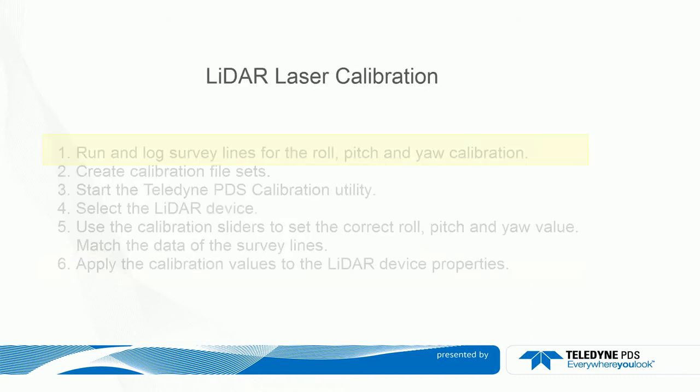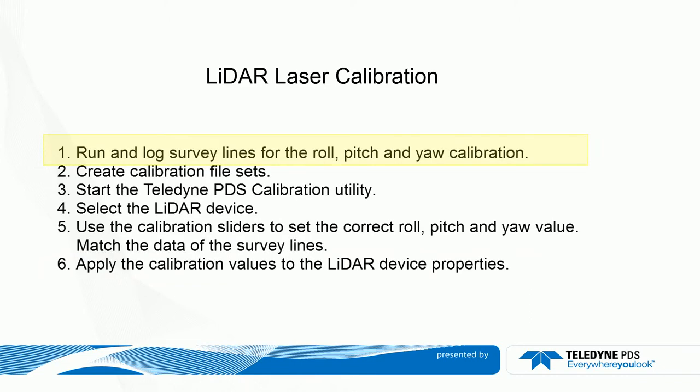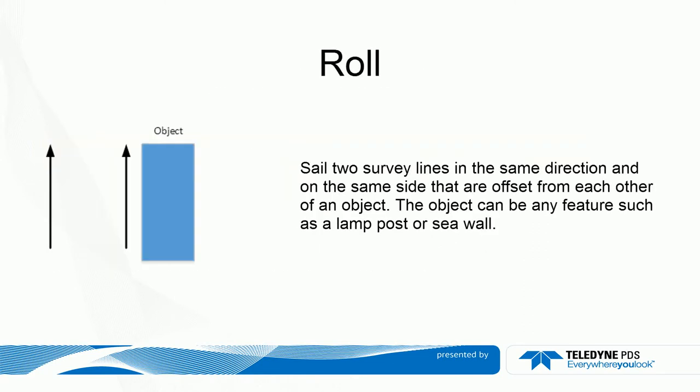We start with running and logging the survey lines used for the calibration. For the roll calibration, sail and log two survey lines in the same direction and on the same side, offset from each other relative to an object. The object can be any feature such as a lamppost or seawall.